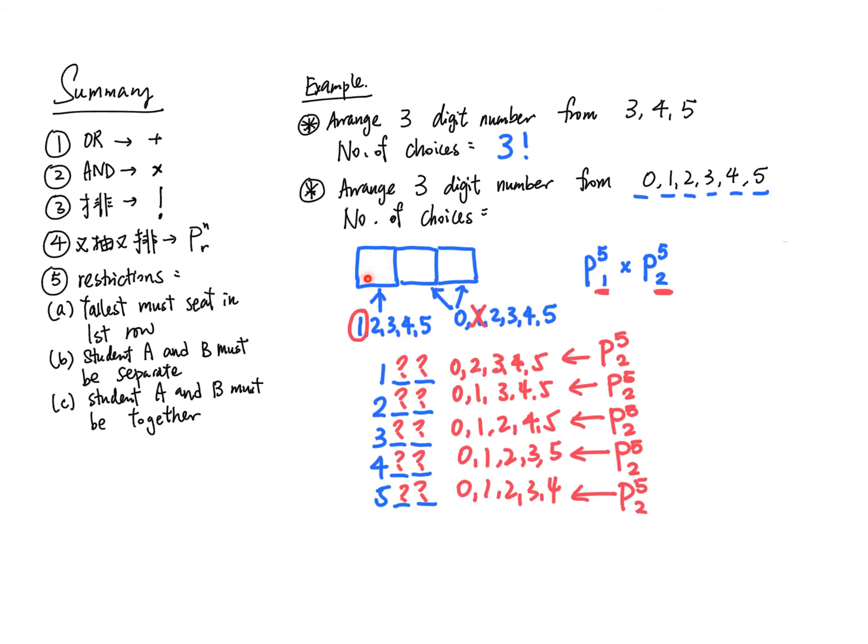Another approach is to first consider which position has the most restrictions. Actually, this question only has one restriction - the hundred digit cannot be zero. If that's the case, solve this problem first. Since the hundred digit cannot be zero, it can be 1, 2, 3, 4, or 5. Then for the ten digit and unit digit, you can choose freely.